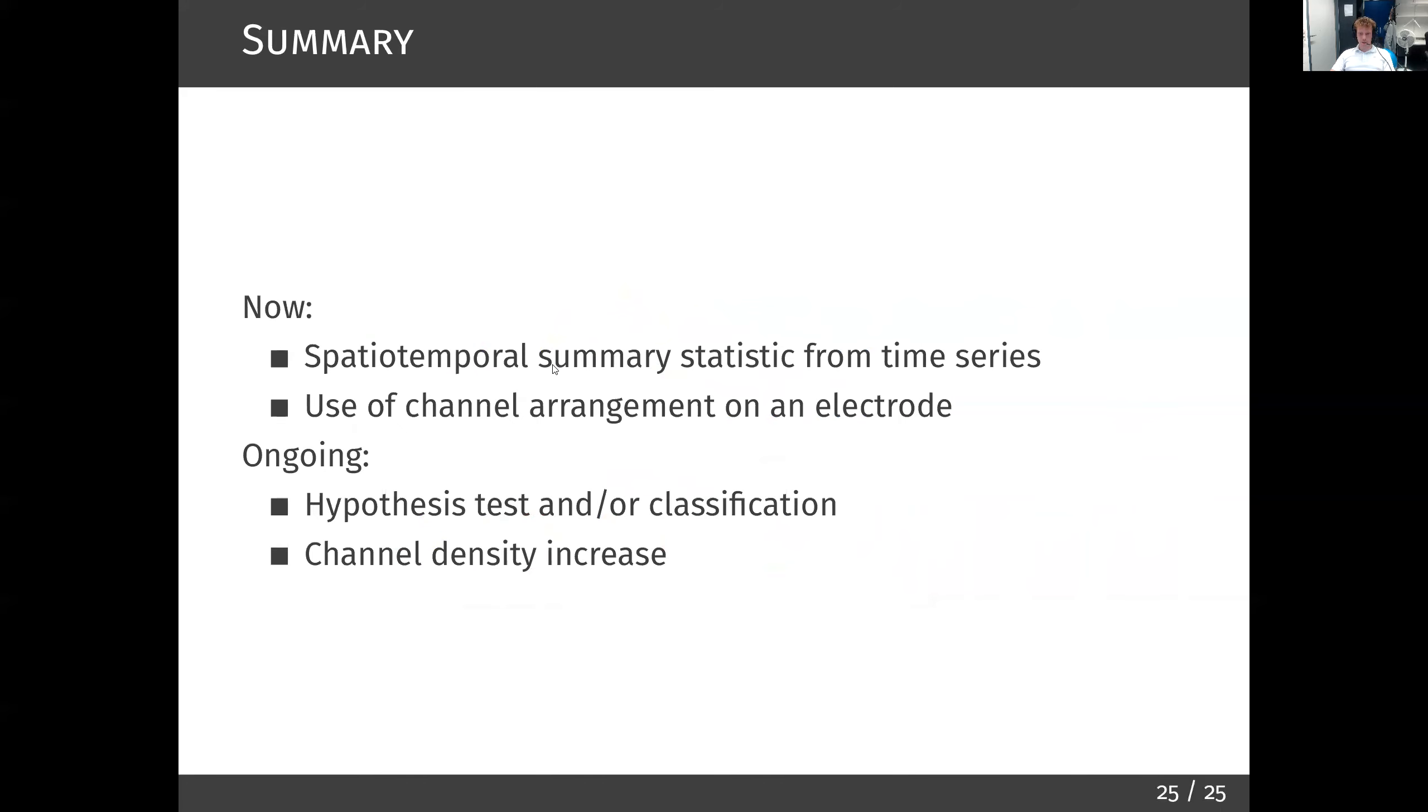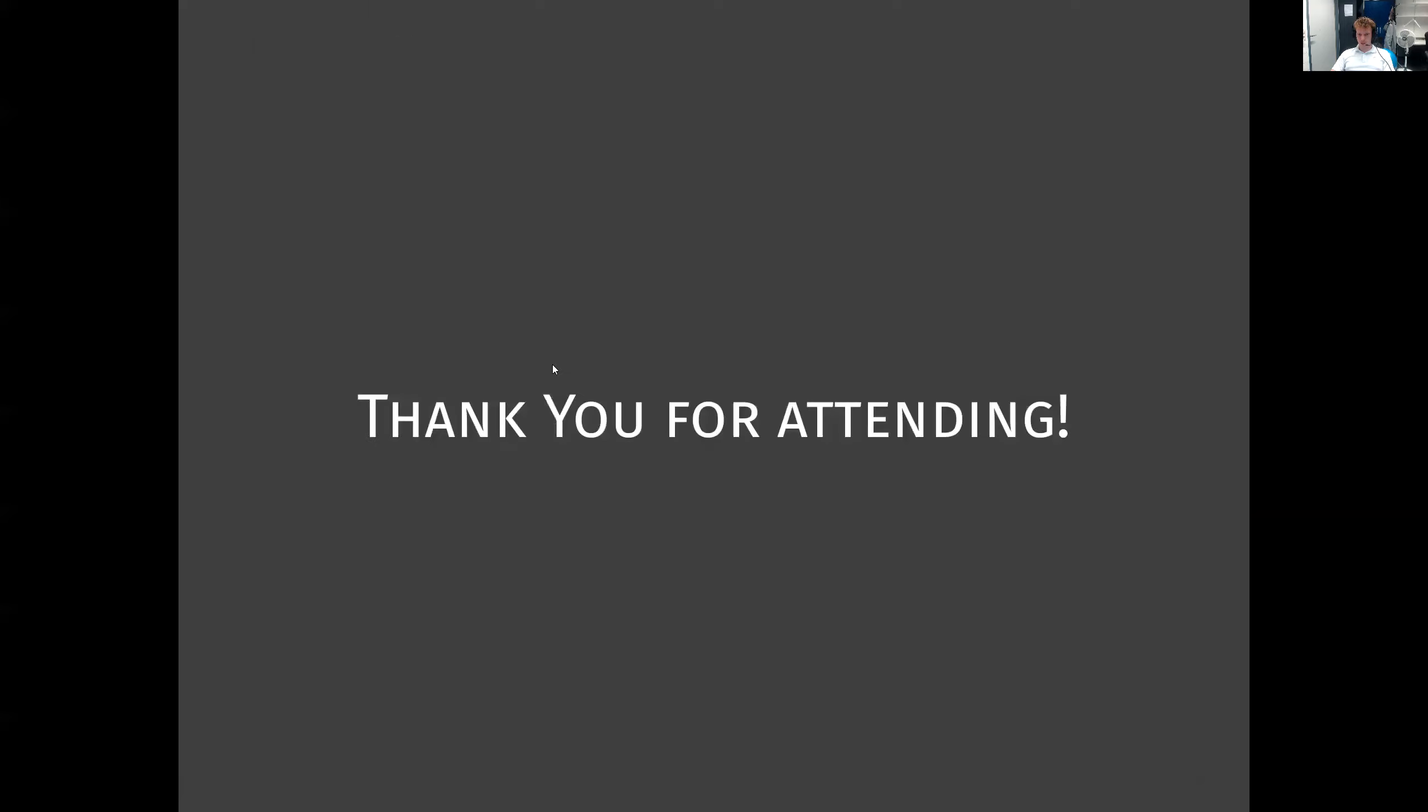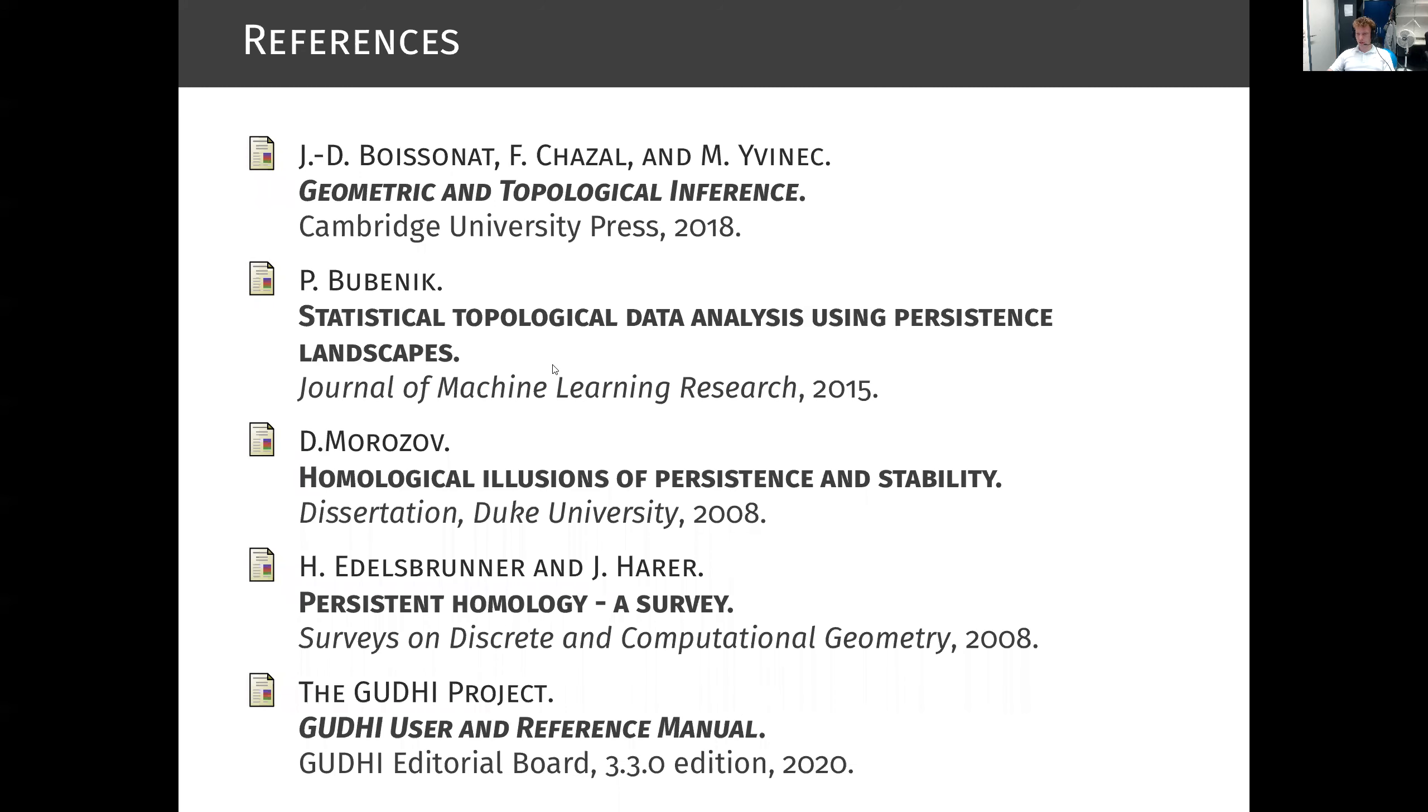In summary, we have shown one way to characterize a dynamic electric field measured at a finite number of positions in extracellular space. In this we have utilized the arrangement of the measurement points and relied on tools from topological data analysis. We have also shown some preliminary examples on real and simulated data, how a state statistic can be used for the analysis of multi-unit activity. Two next things would be to more aggressively test classification performance and perhaps to derive a hypothesis test for comparing two different states. Another very curious venue is to study asymptotic behavior upon channel density increase. I thank you for attending my talk and here I leave you with the references that I used in preparation.